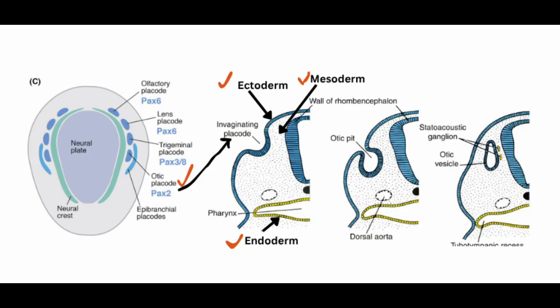The inner ear is the first of the three anatomical parts to form. The otic placode, or otic disc, appears dorsolateral to the hindbrain and invaginates into the mesenchyme — that is, into the mesoderm — forming the otic pit. The sides of this otic pit fold together and fuse to form a hollow structure called the otic vesicle, which is lined with columnar epithelium. The otic vesicle later goes deep to the surface ectoderm, forming the otic capsule.